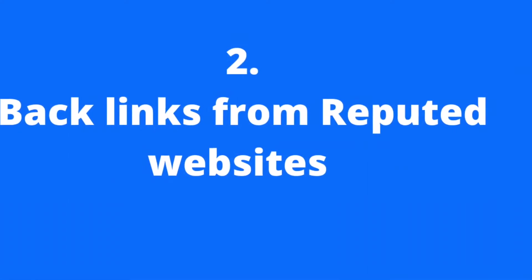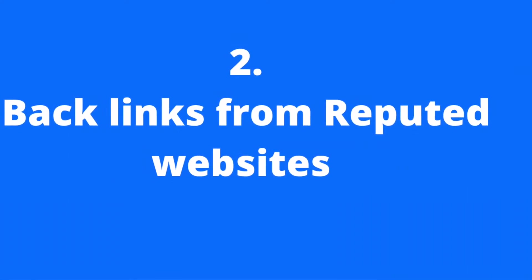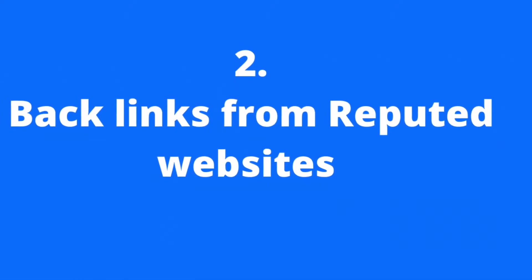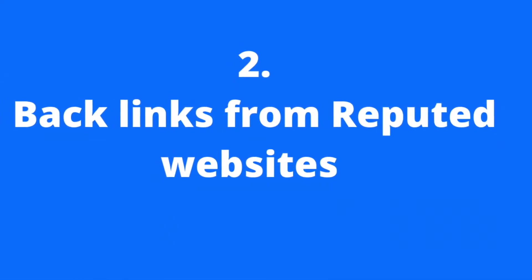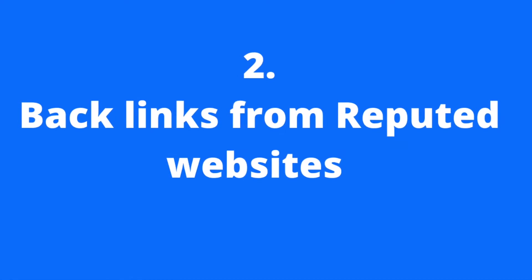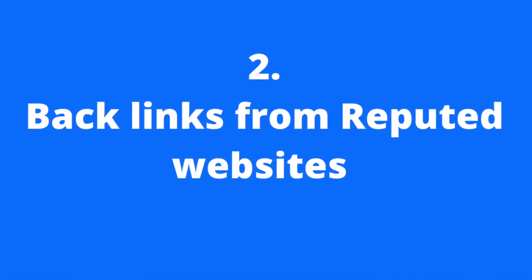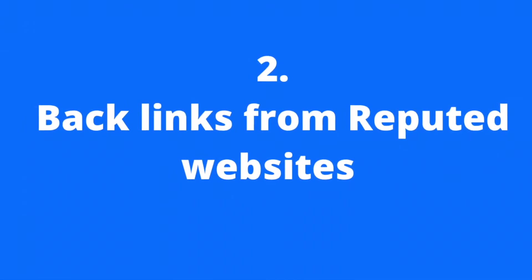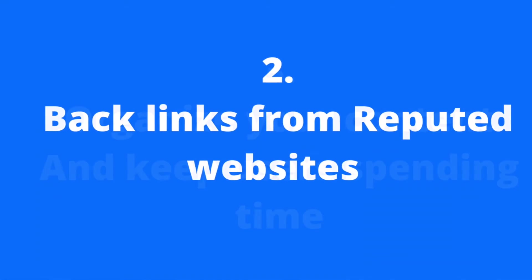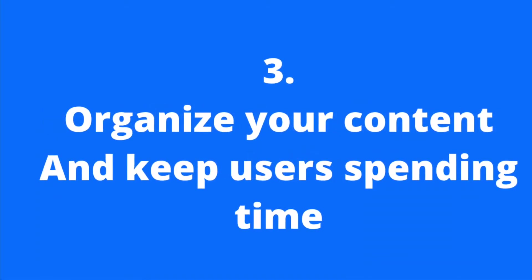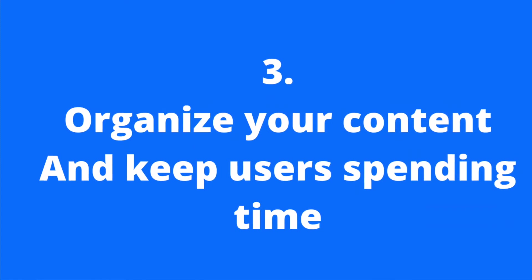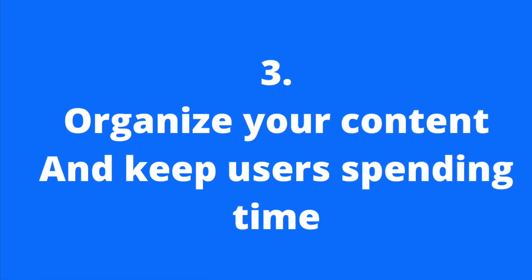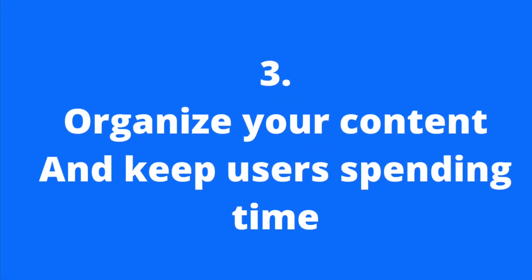Second is your blog or post reference coming from a reputed website, which is also called backlinks. With the help of these backlinks, new users will come to your blog according to Google. Your blog or website will be considered good if users redirect to your blog from reputed websites. Third is how you display your content so that the user spends more time on it. These three things are the most effective to bring new users, and these type of users are called organic users.